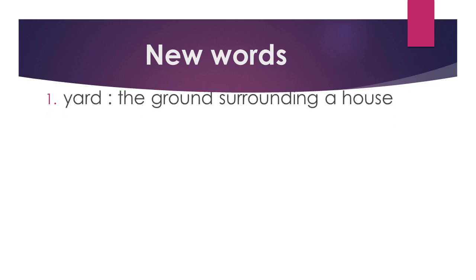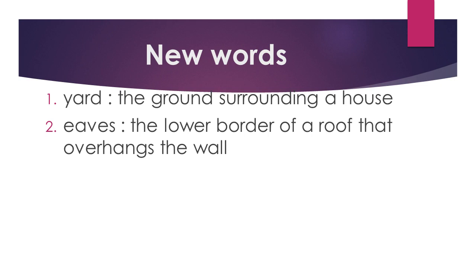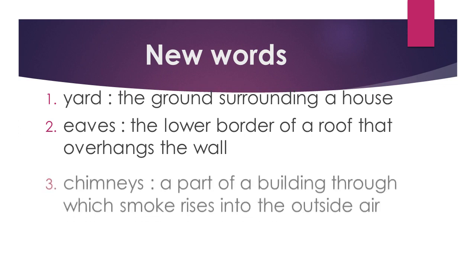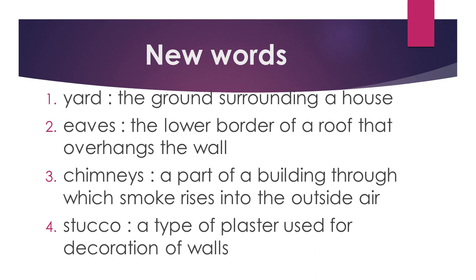Let us begin by writing the heading 'New Words' in black ink. Number one: yard — the ground surrounding a house. Number two: eaves — the lower border of a roof that overhangs the wall. Eaves is generally used in plural form only. Number three: chimneys — a part of a building through which smoke rises into the outside air. Number four: stucco — a type of plaster used for decoration of walls, or we can say POP, that is plaster of Paris. You might have seen that the ceilings of some houses are decorated with POP, and that is called stucco.